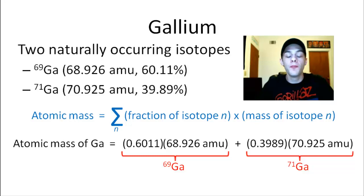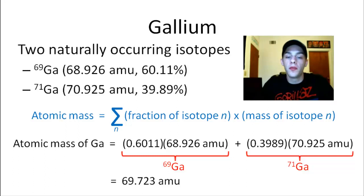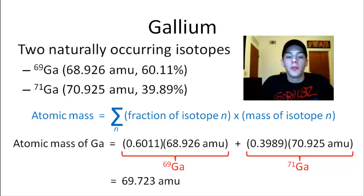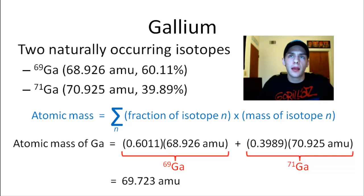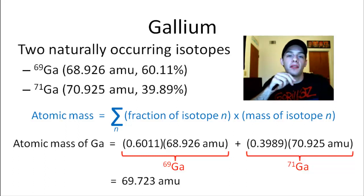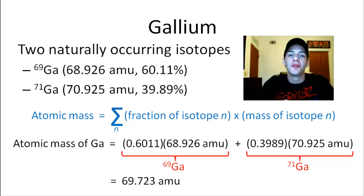Hopefully you paused the video and worked it out. The number I got is 69.723 AMU. If you scroll back, that's actually the number that appeared below the chemical symbol for gallium — so it agrees with what we see on the periodic table. I'll stop the video here, but in the next video we're going to find the relative amounts of two different isotopes given their isotopic masses and their atomic mass. Hope you guys learned something — have a good one!